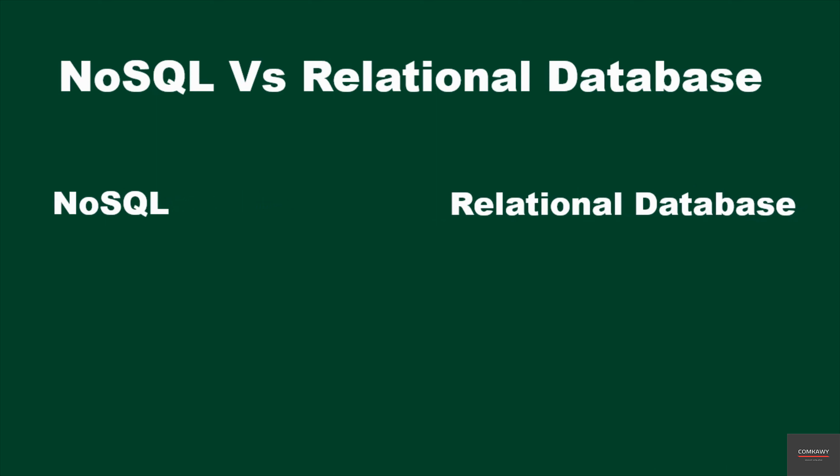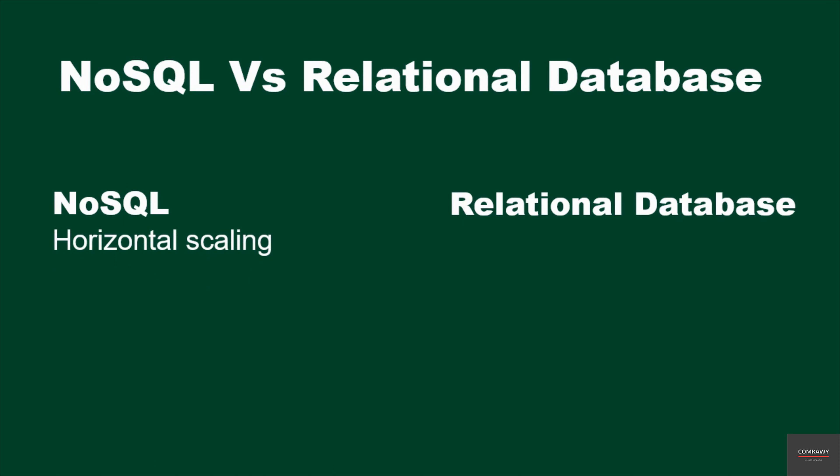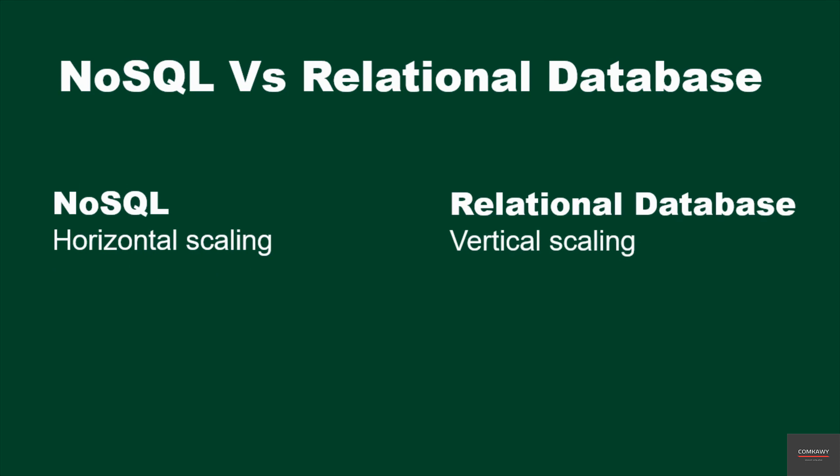A NoSQL database has horizontal scaling, while a relational database has vertical scaling. By horizontal, basically what that means is that you can add more machines to the pool of resources you already have.